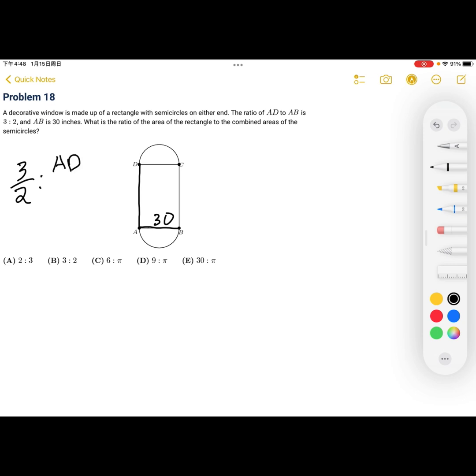So, we can set up a proportion to find AD. So, we have that AD is equal, 3 halves is equal to AD over 30. So, cross-multiplying, we have that 2AD is equal to 90. Dividing 2 from both sides, we get that AD is equal to 45. So, now we can find the area of the rectangle, which is just 45 times 30, which is 1350.